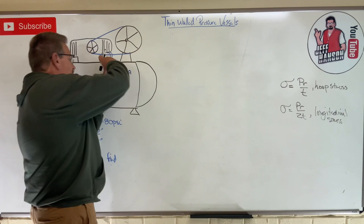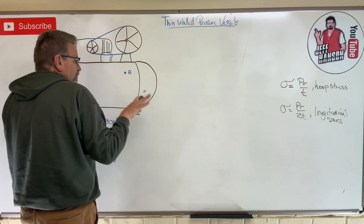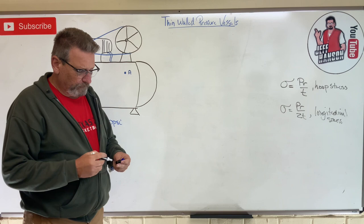The hoop is trying to make the cylinder get bigger in diameter, whereas the longitudinal is trying to push the ends off the tank.